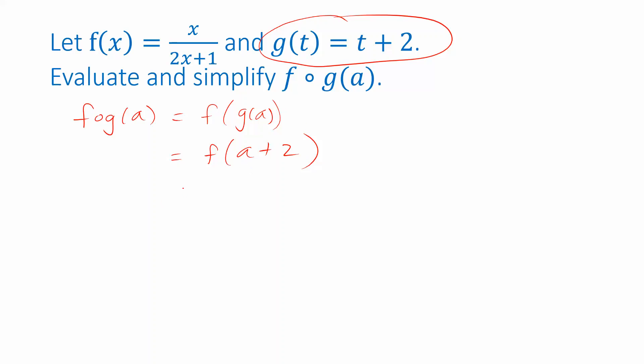Now I need to plug that into the formula for f, which is right here. So everywhere I see an x, I'm going to replace it with the quantity a plus 2. So there's an x in the numerator. That gets replaced with a plus 2. And then there's an x in the denominator. There's 2 times x, and I have to replace that x with a plus 2.